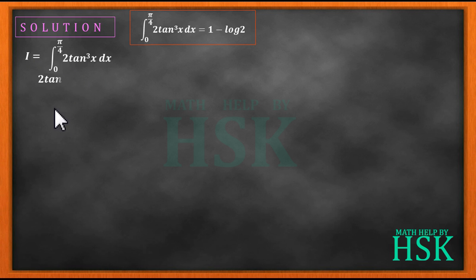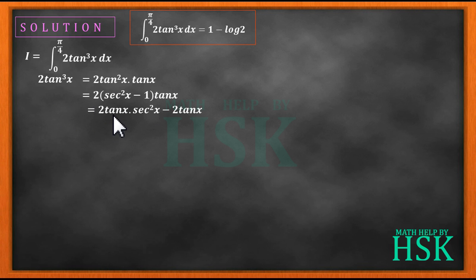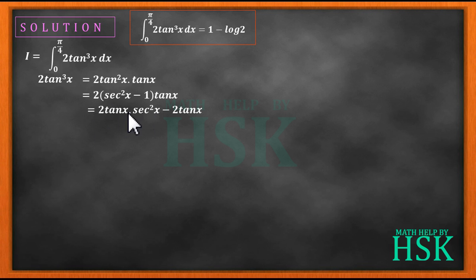I take 2tan³x, which can be written as 2·tan²x·tan x. Now tan²x can be written as sec²x - 1, and opening the bracket gives 2tan(x)·sec²x - 2tan(x). If I assume tan x = t and differentiate, I get sec²x dx = dt, so integration is possible by the substitution method and we can integrate tan x directly.